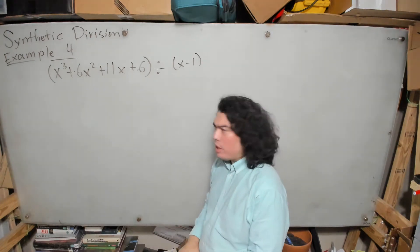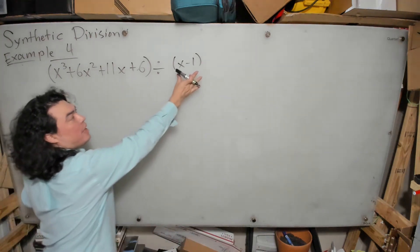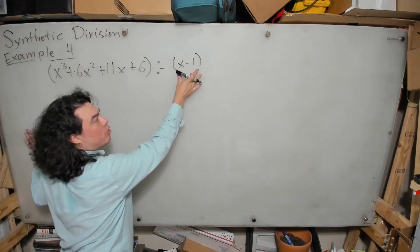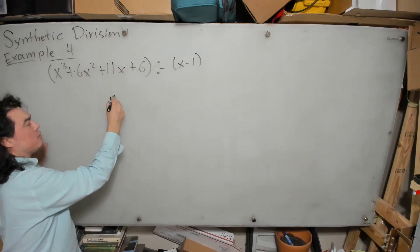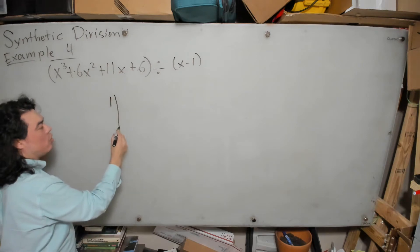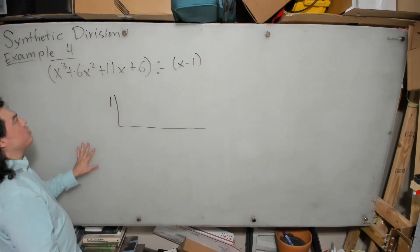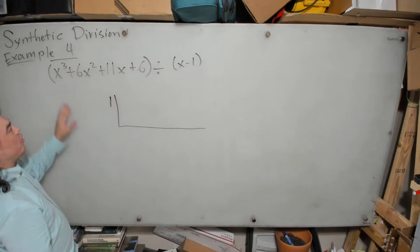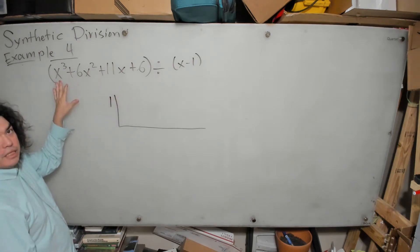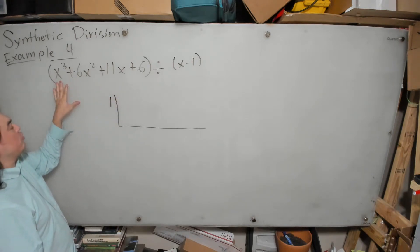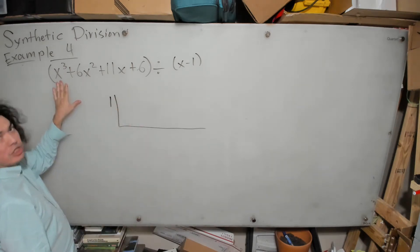The first thing we need to know is that because we're dividing by x minus 1, we're going to put a 1 on the outside of the synthetic division house like this. We're then going to put our big synthetic division house, and we can see in this case that there are no missing powers of x in this polynomial.